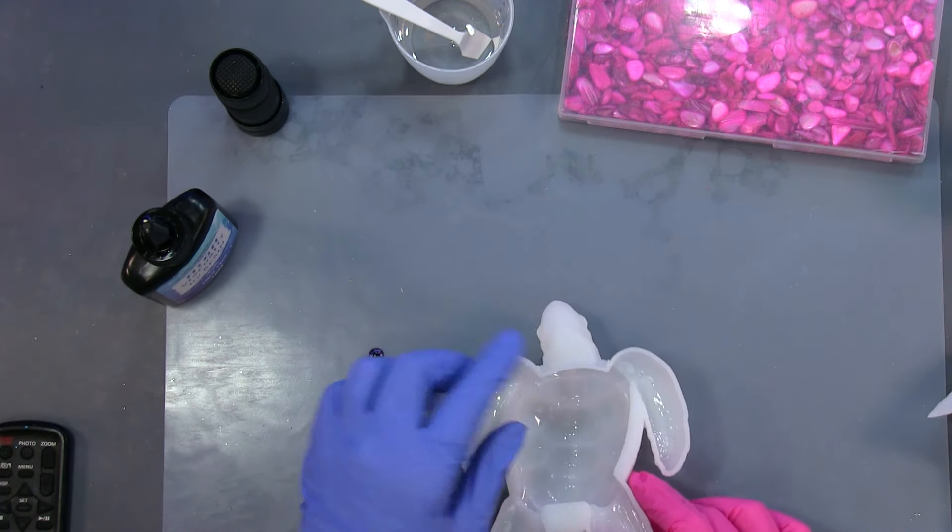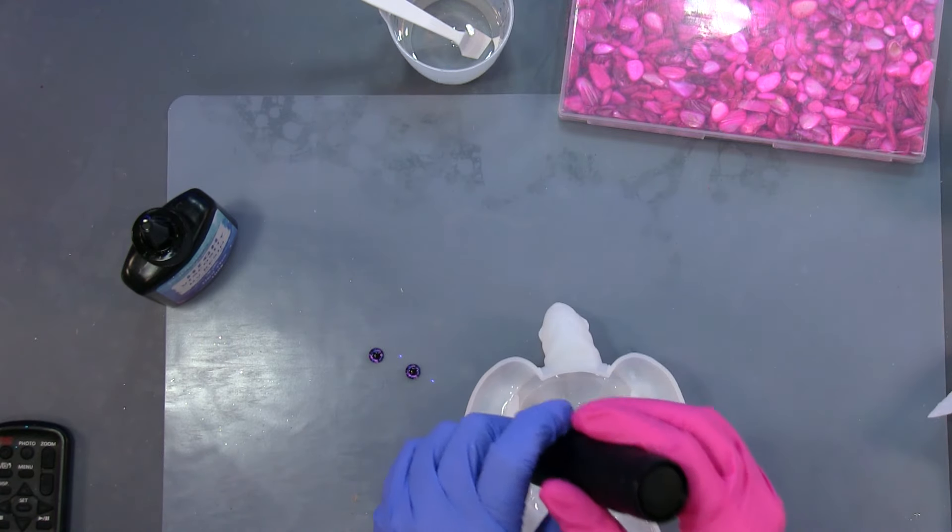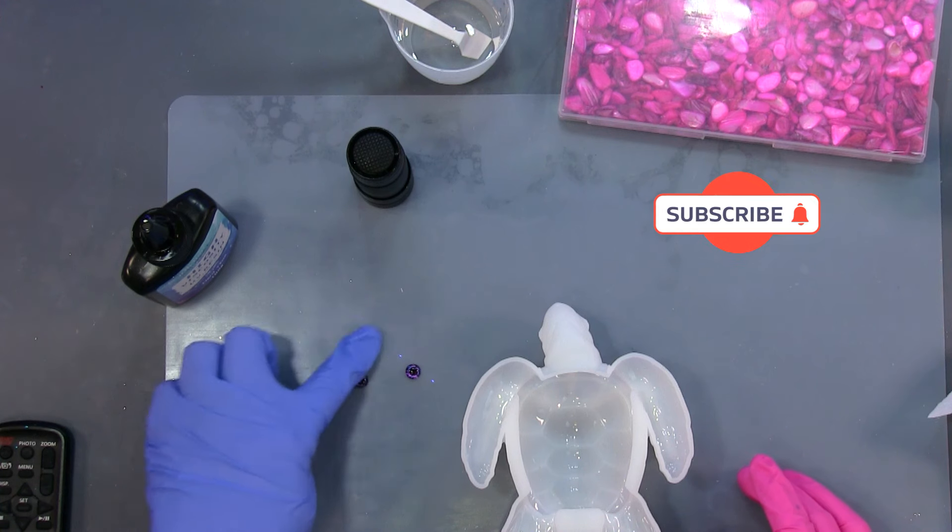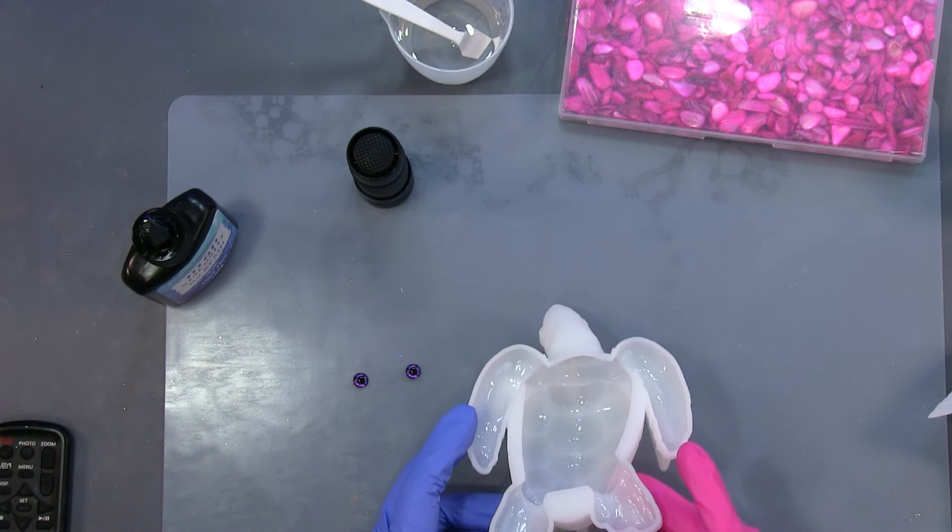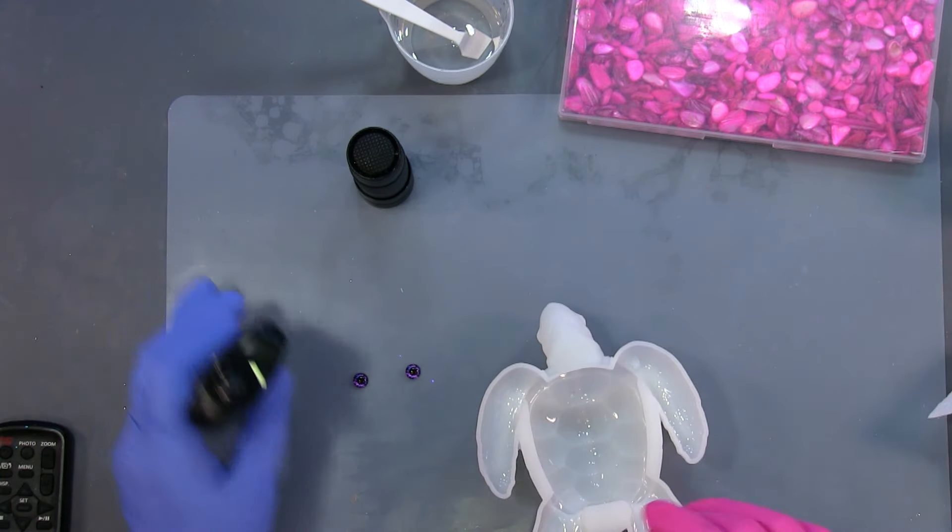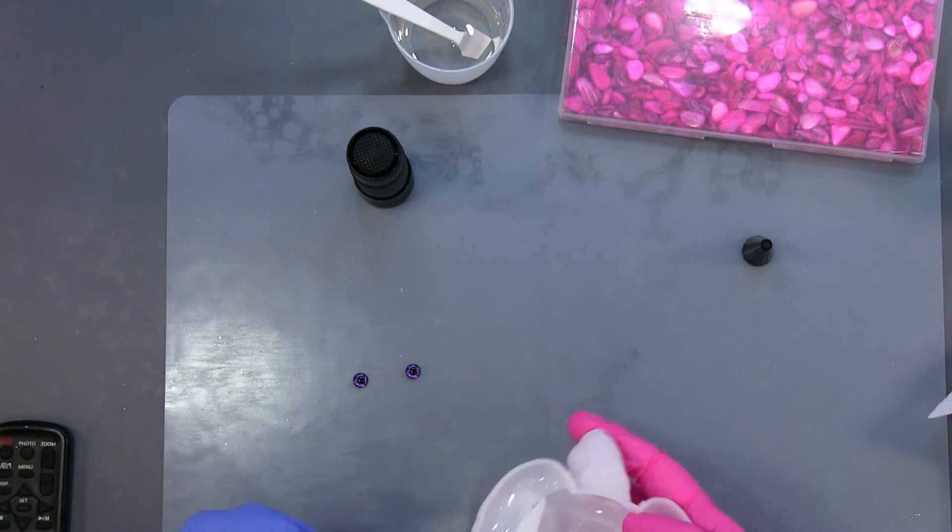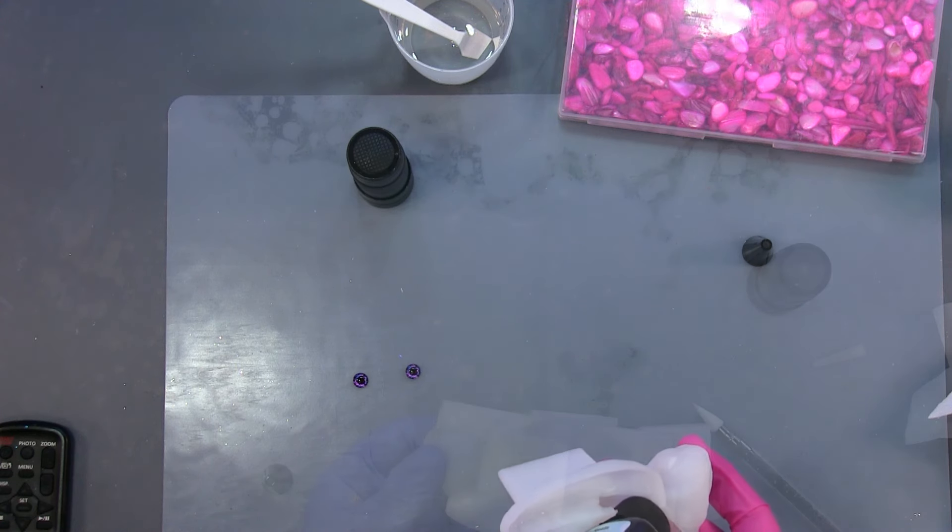So what I want to do is take these little glass cabochon eyes and UV them in here. I'm going to start off with my little UV flashlight torch, and then once I get these in, I'm going to set it in my UV light lamp for five minutes, and then I'm going to mix up the other part of the resin.